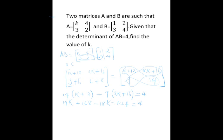Now, when we collect the like terms together, we will have 14K minus 18K, that is negative 4K. 168 minus 144, that is positive 24, should be equal to 4.